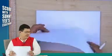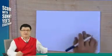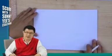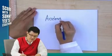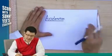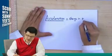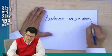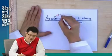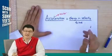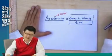So that covers average velocity, average speed, displacement, and distance. Now, what is acceleration? Acceleration is the change in velocity divided by time taken. Acceleration is a vector quantity because it has direction — it can be positive or negative.